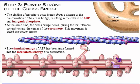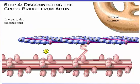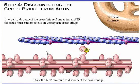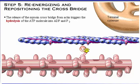In order to disconnect the crossbridge from actin, an ATP molecule must bind to its site on the myosin crossbridge. Click on the ATP molecule to disconnect the crossbridge. The release of the myosin crossbridge from actin triggers the hydrolysis of the ATP molecule into ADP and inorganic phosphate. Energy is transferred from ATP to the myosin crossbridge, which returns to its high energy conformation. Click the bound ATP to trigger hydrolysis.